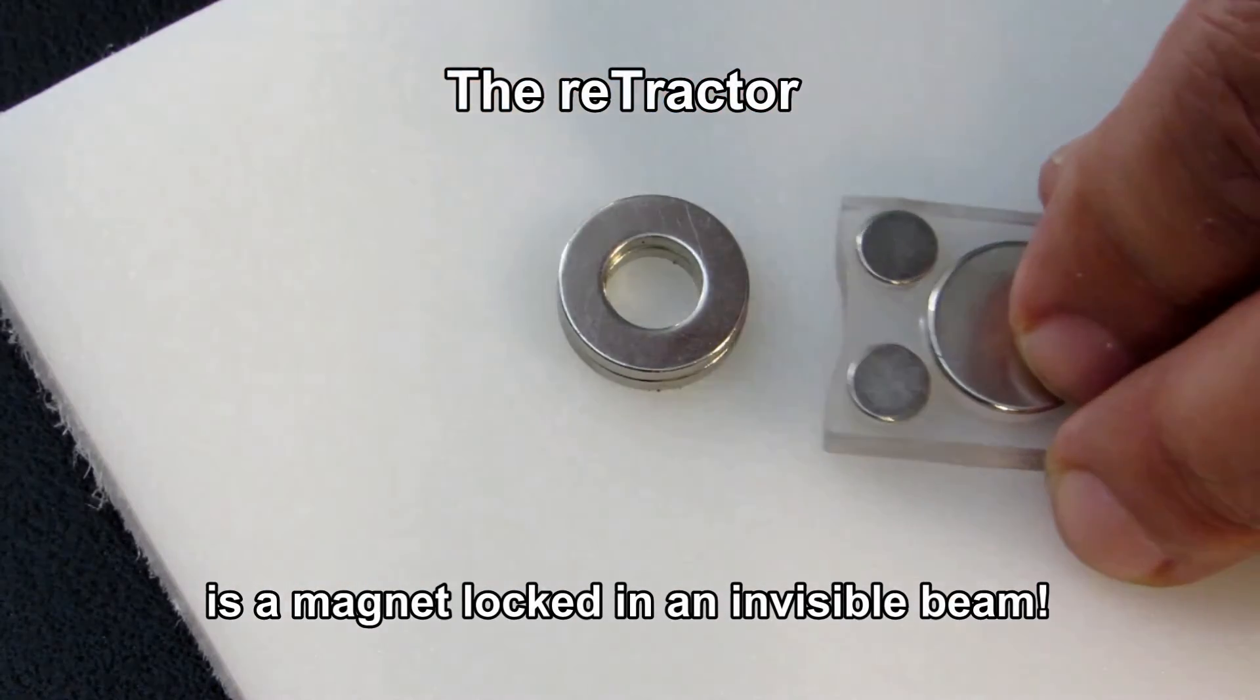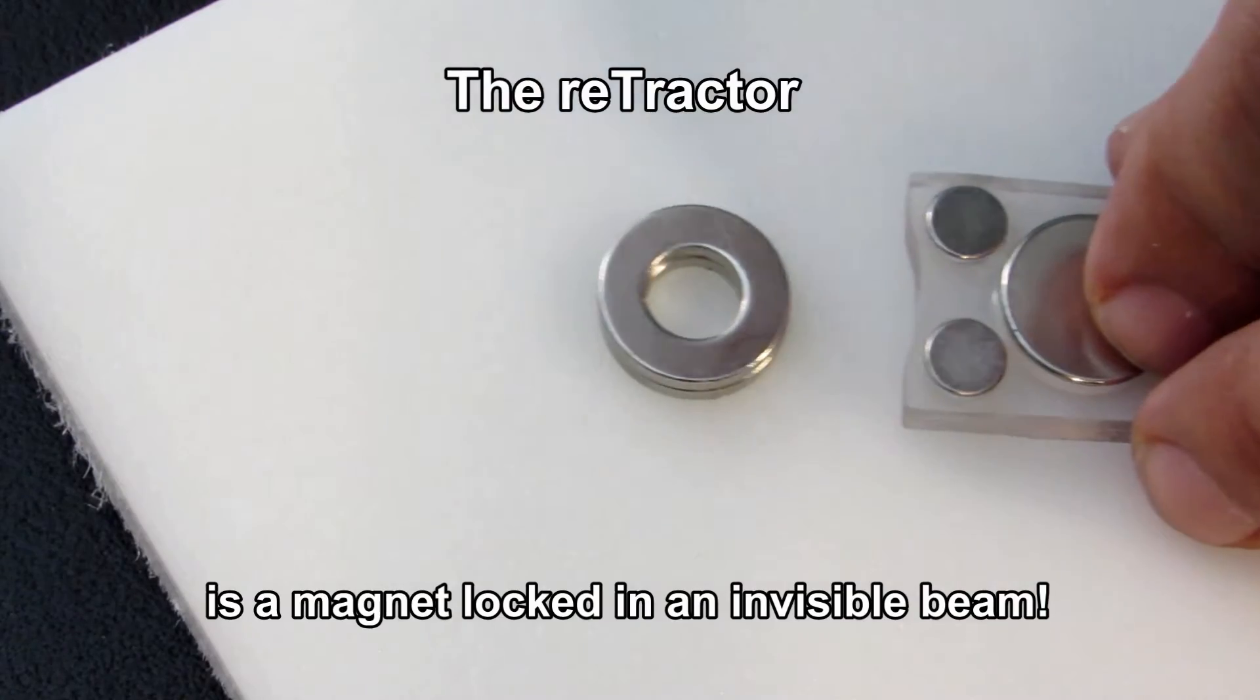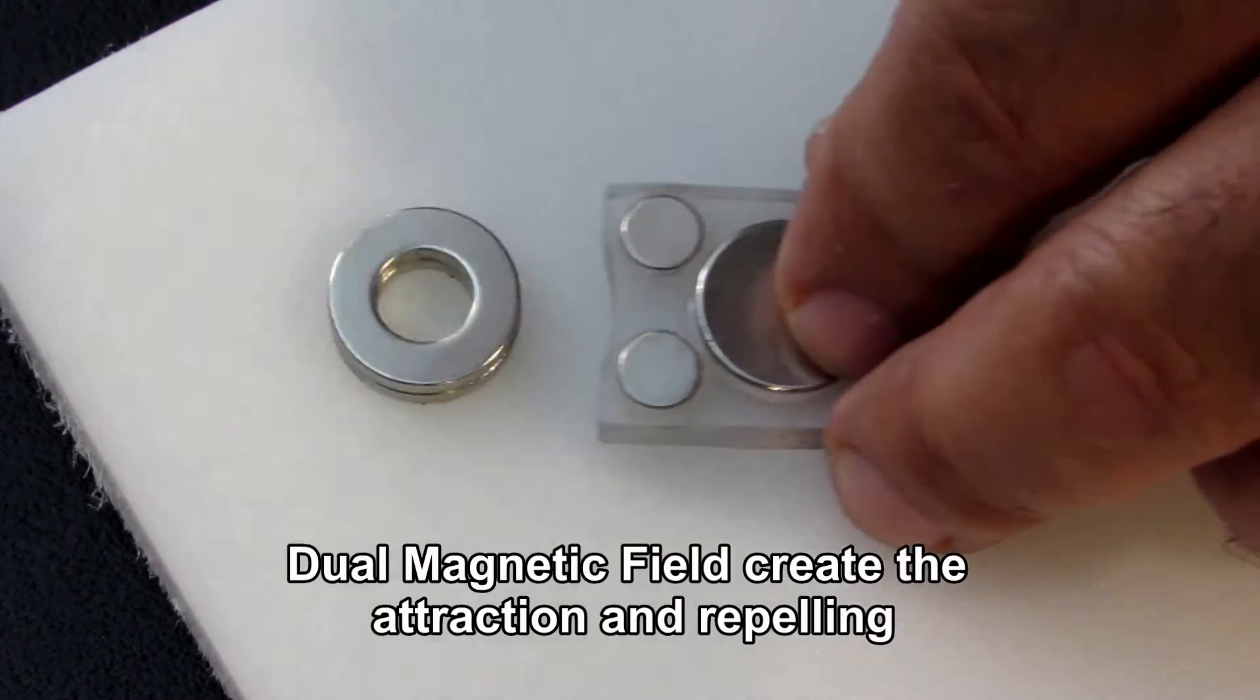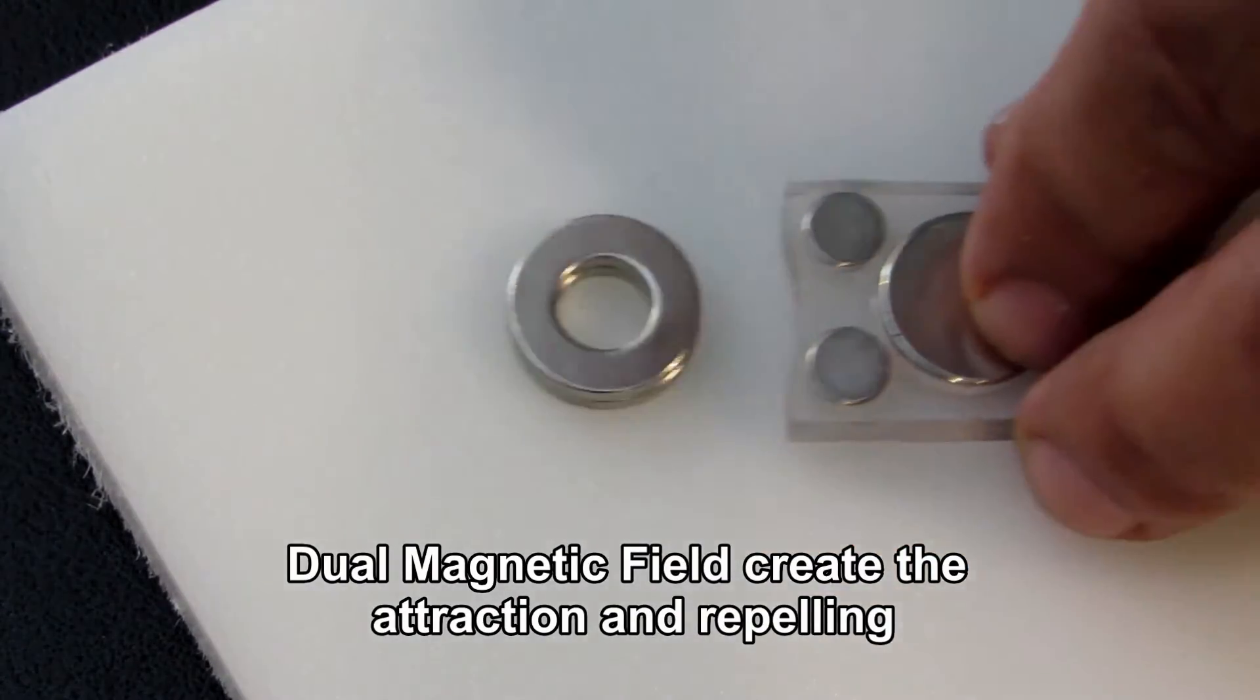The retractor is a magnet locked in an invisible beam. Dual magnetic fields create the attraction and repelling.